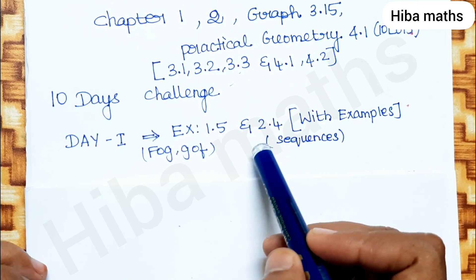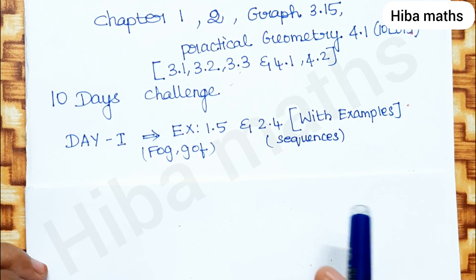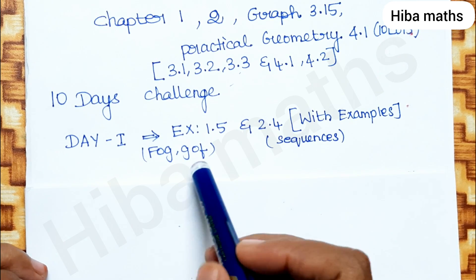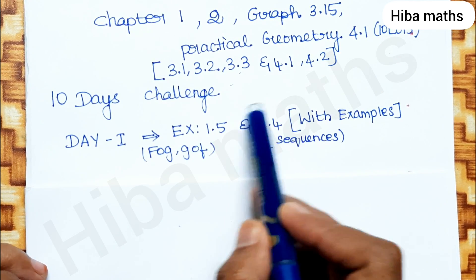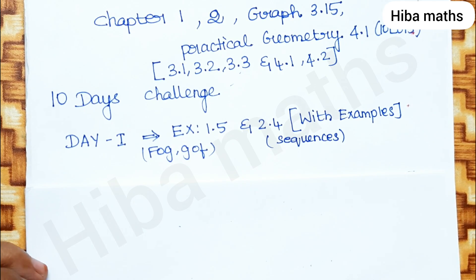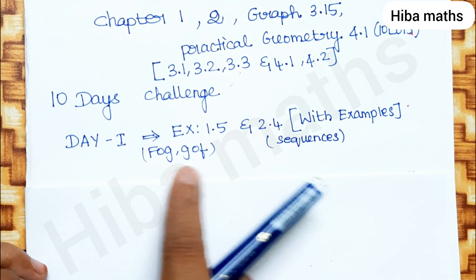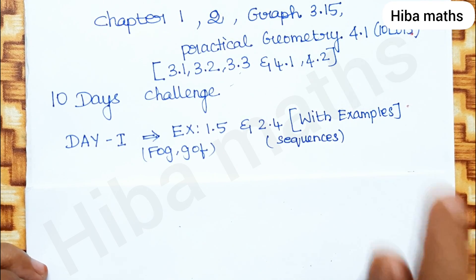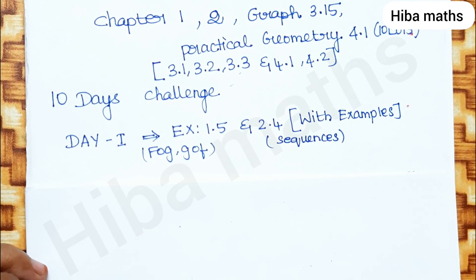The exercise for Day 1 also includes exercise 2.4, which is an easy exercise. If you want to do the same numbers, you can substitute and solve. One is an easy exercise and the other is also easy. You can do them in the same session and complete the same questions. Day 1 plan: exercise 1.5 and exercise 2.4 with examples — complete.